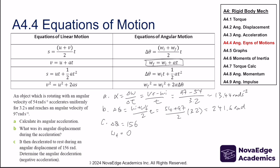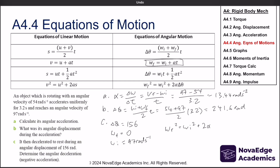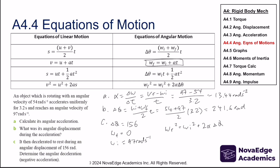For part c, the object decelerates to rest over an angular displacement of 156 radians. We know final angular velocity is zero and initial is 97 rad/s. Using the equation ωf² = ωi² + 2αθ: zero squared equals 97 squared plus 2α times 156.